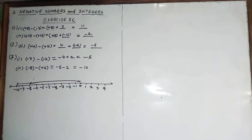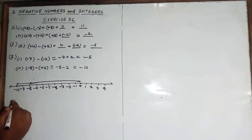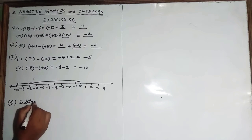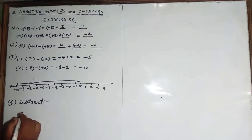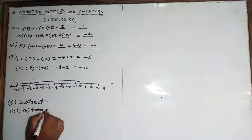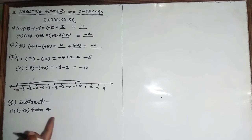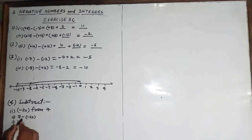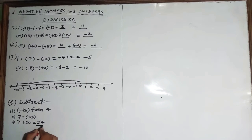Question number four: subtract. First part is minus 20 from 7. Whatever is written, you will write it in form: 7 minus minus 20. Now minus into minus becomes plus 20. So the answer is 20 plus 7 equals 27.